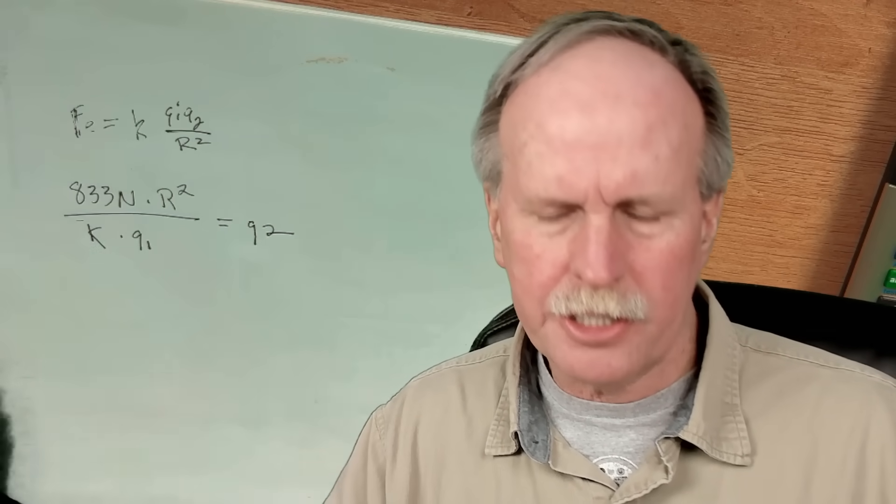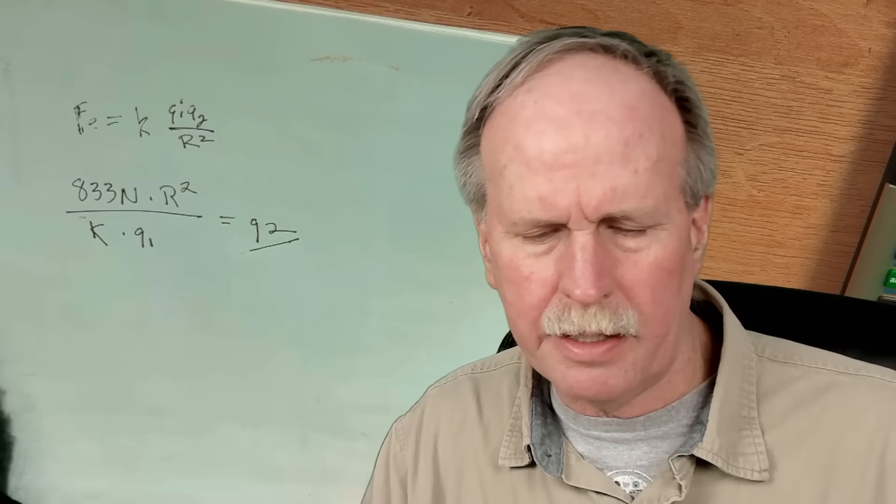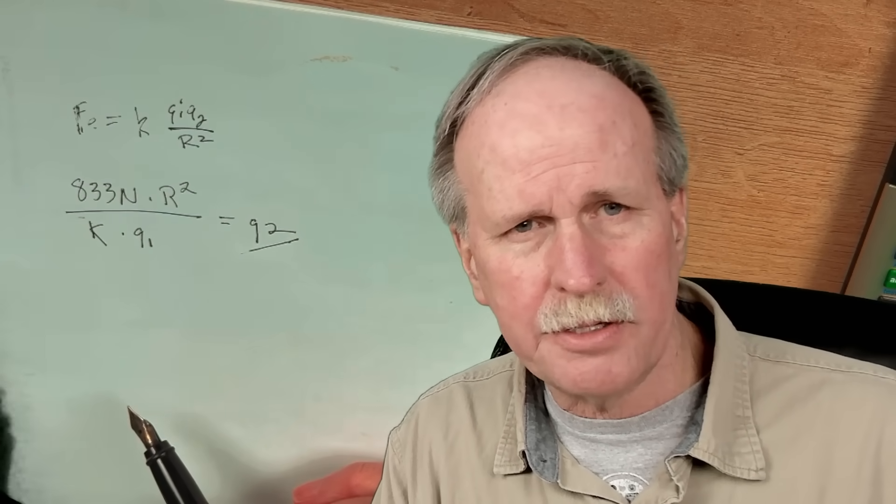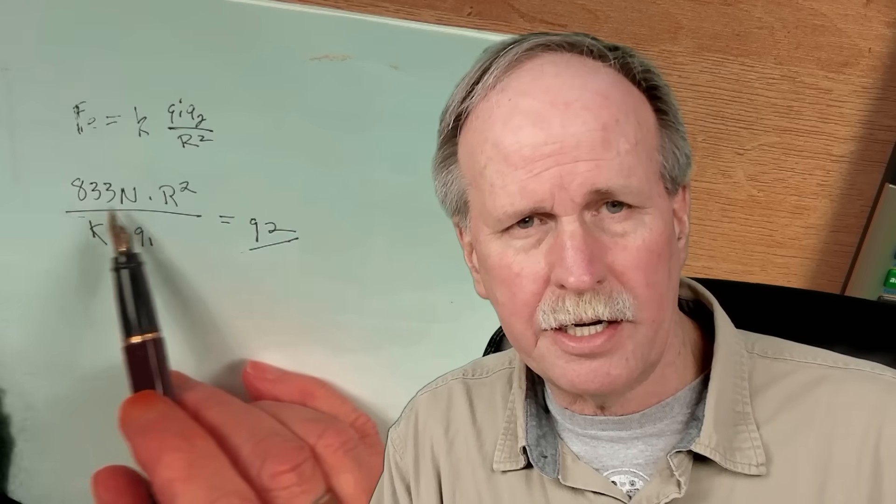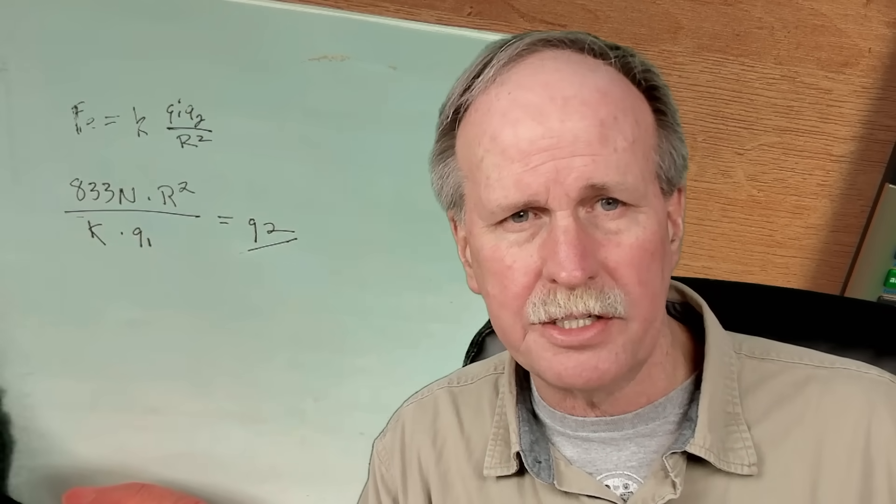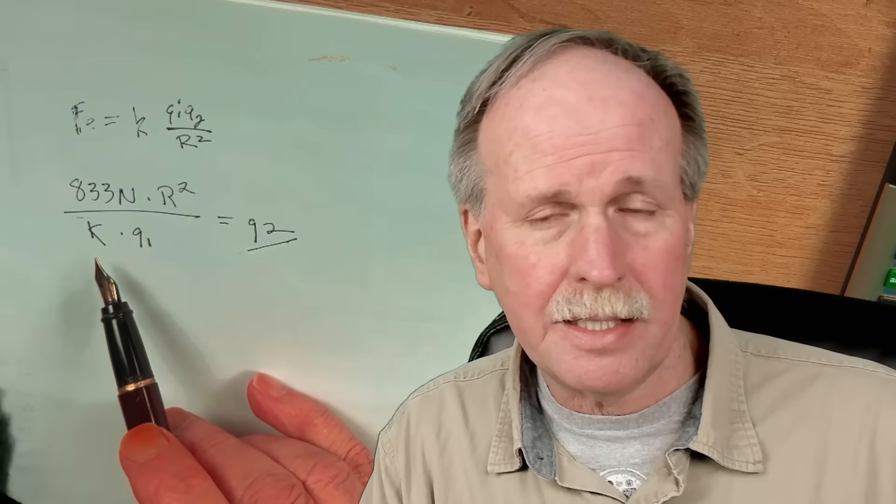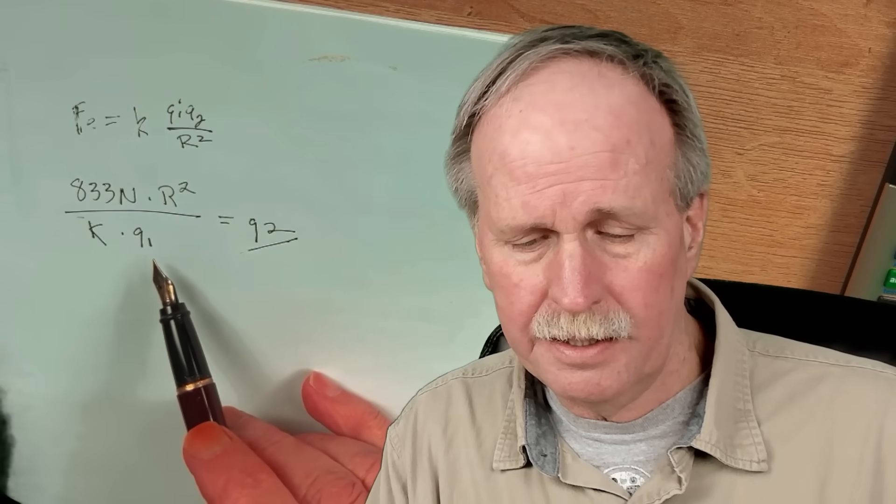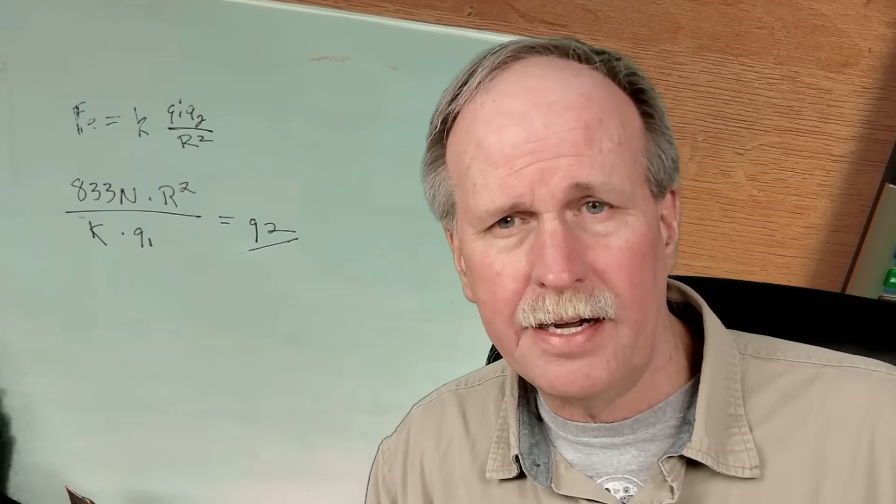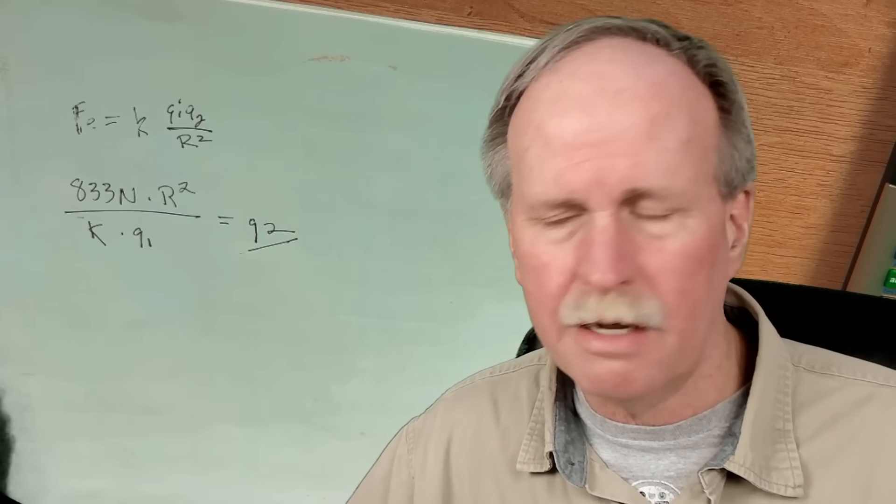Now, here, I've actually just isolated charge 2, which is going to be the charge on me, and expressed it in terms of these other values. So my weight is 833 Newtons. The radius of the Earth will be 6.371 times 10 to the 6 meters. K is 9 times 10 to the 9th. And Q1 will be 5 times 10 to the 5th. Let's go ahead and write those out and see if we can solve for it.